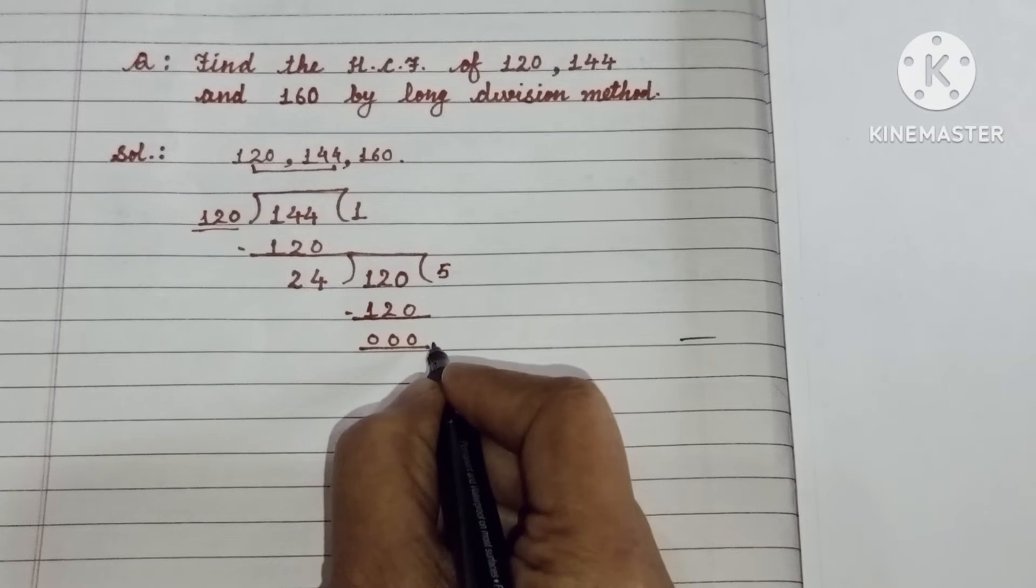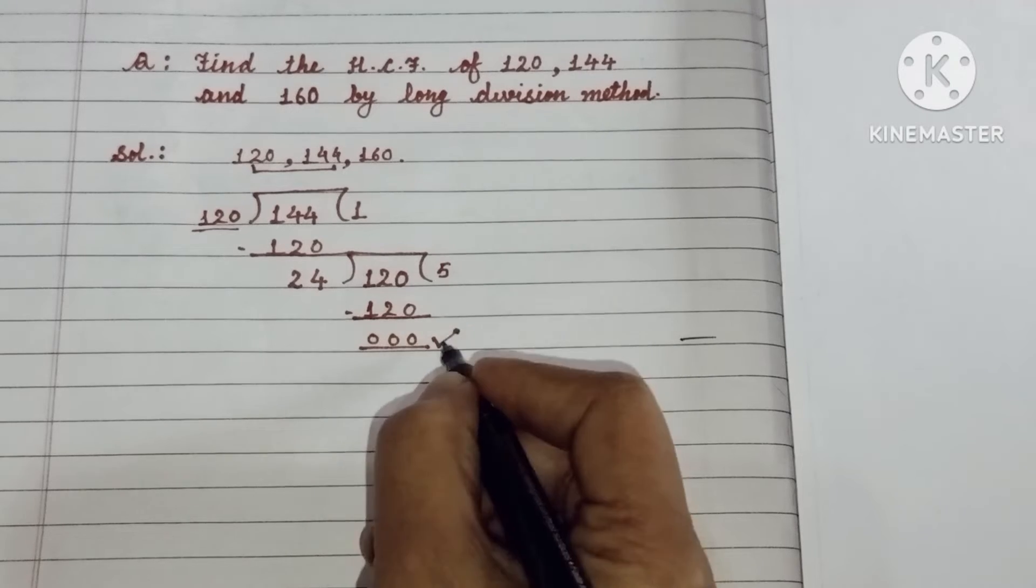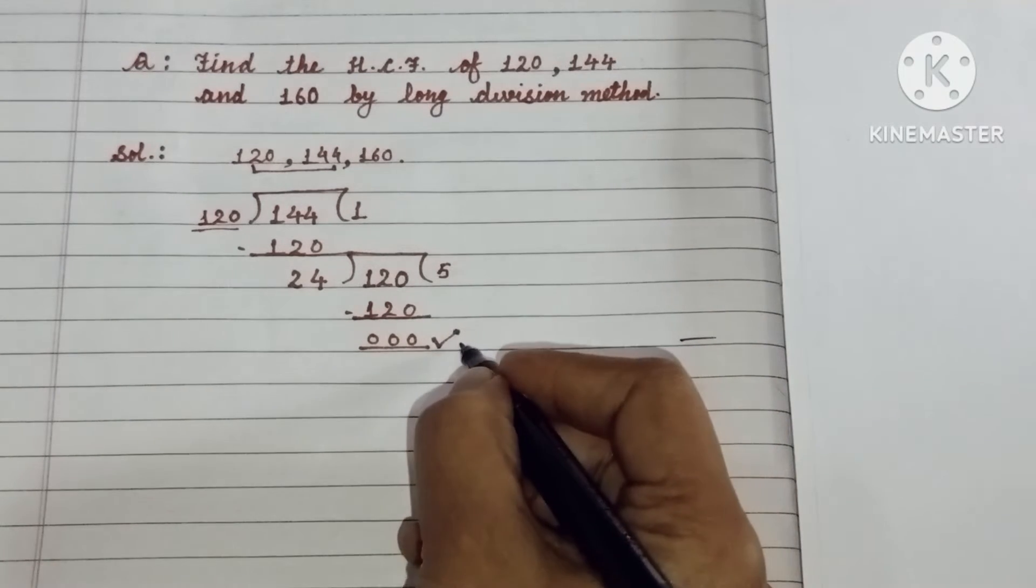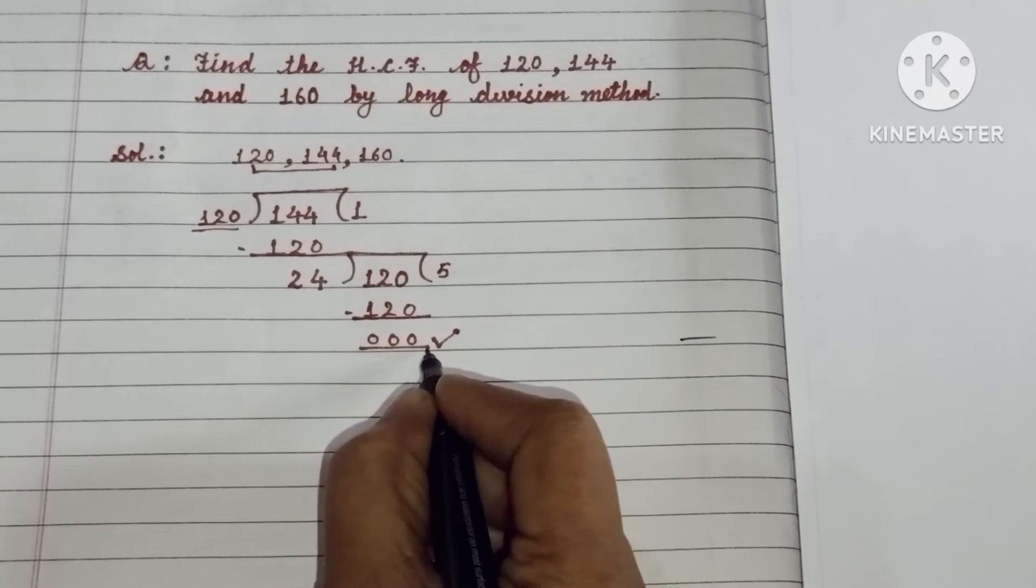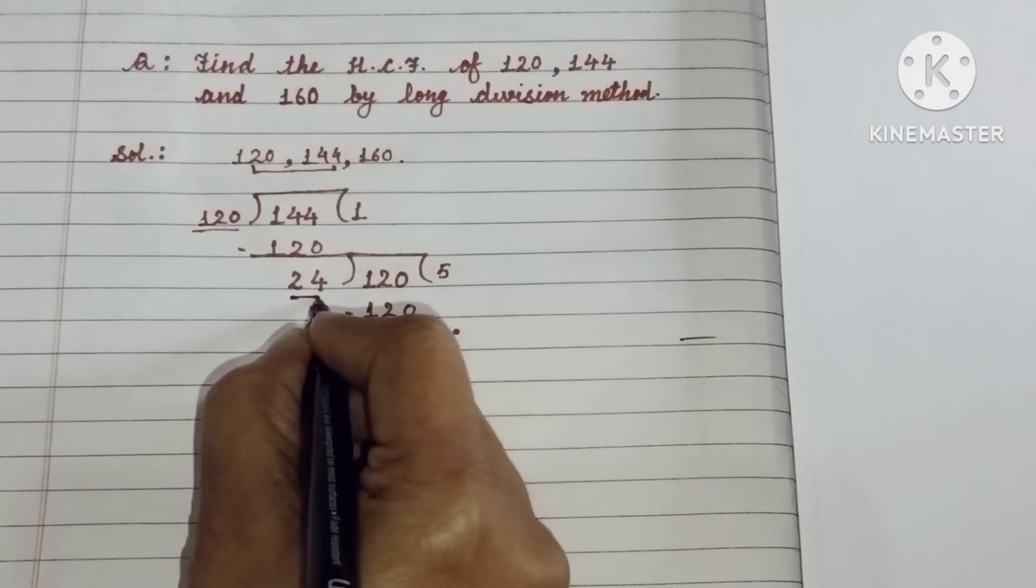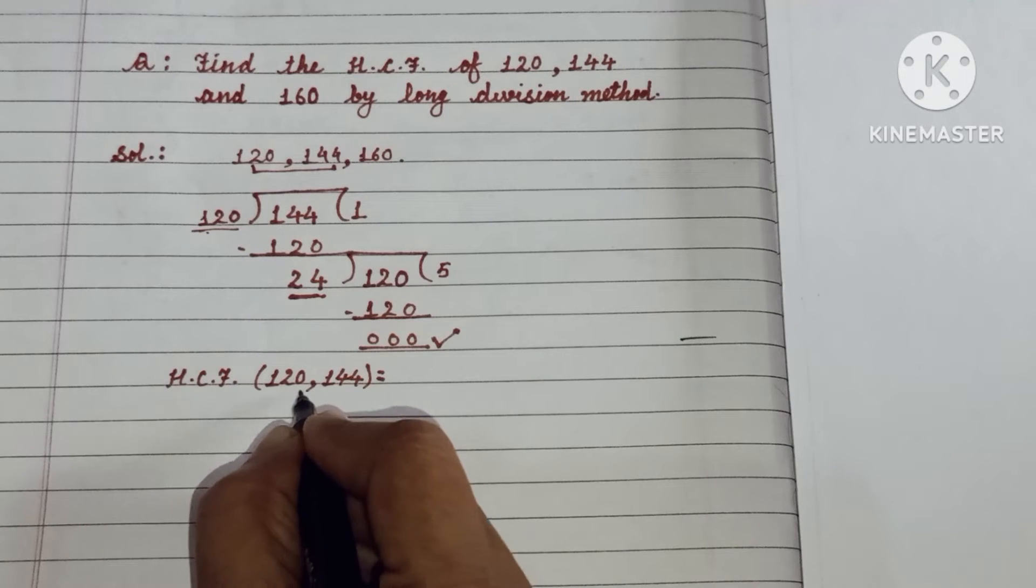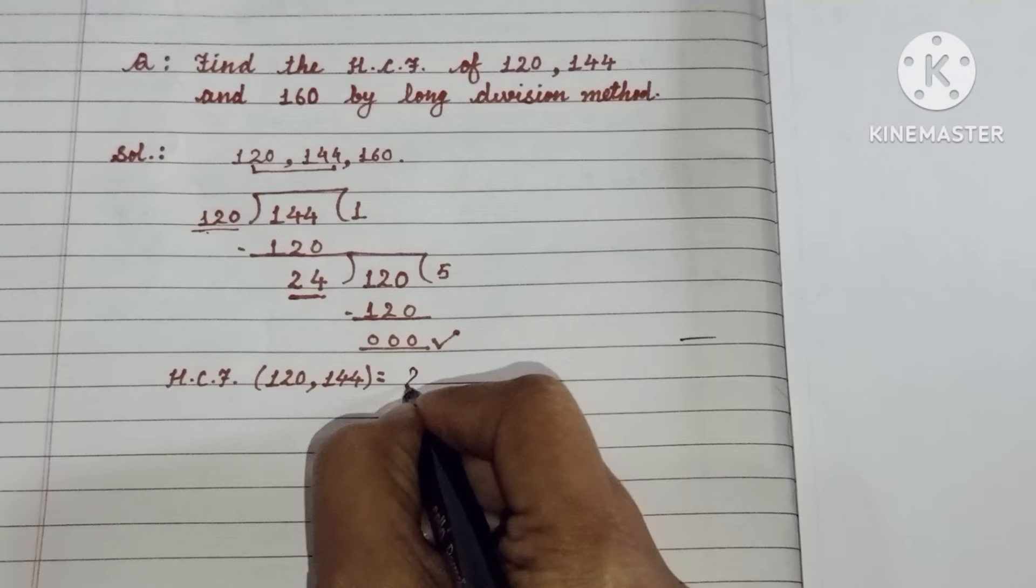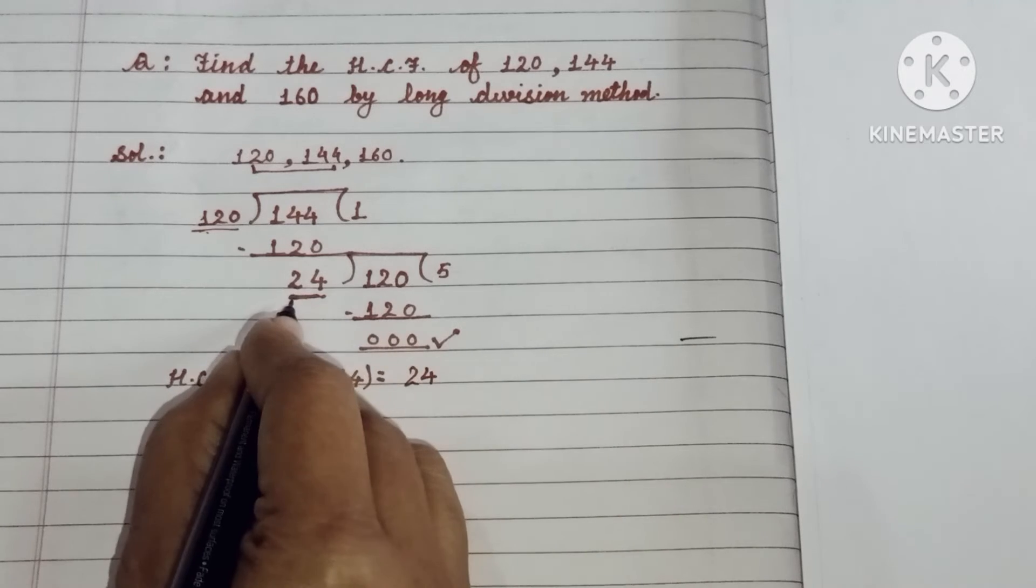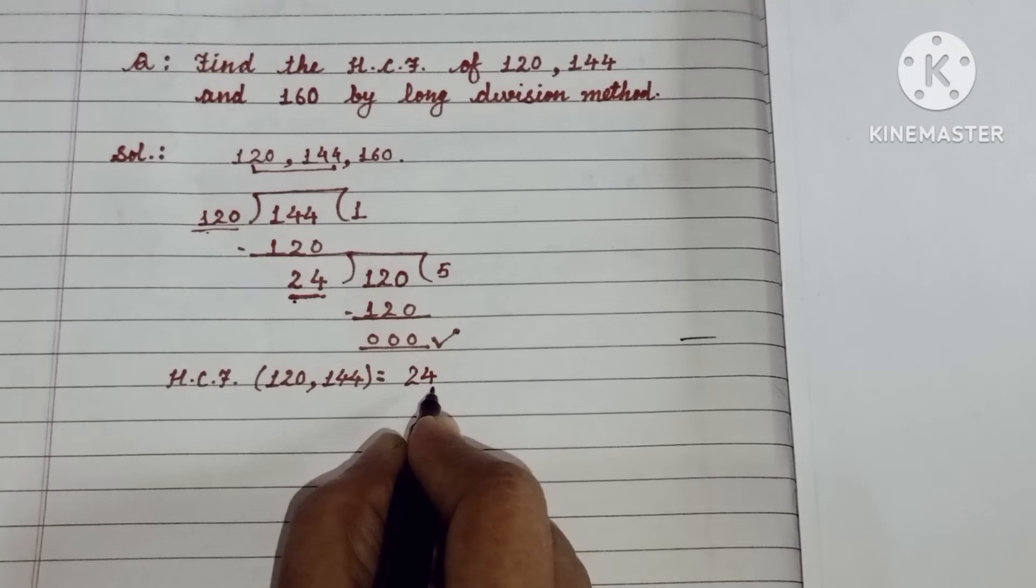Repeat the process till the remainder will be 0. Aap kya process bita tab tuk repeat karenge. Jep tuk ki aapka remainder 0 na ajae. Aapka remainder 0 aega. That divisor will be the HCF of these two numbers. So HCF of 120 and 144 is 24. Clear bita? Jee last divisor hooga aapka. That will be the HCF.